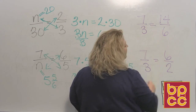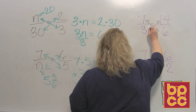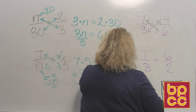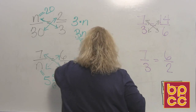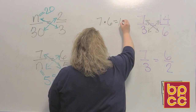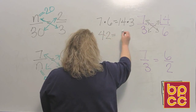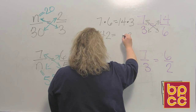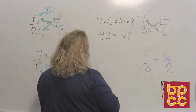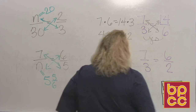We have 7/3 and 14/6. To find out if they're equal, we cross multiply 7 times 6, and we want to know if that's equal to 14 times 3. Well, 7 times 6 is 42, and 14 times 3 is also 42. So yes, this is a true proportion.